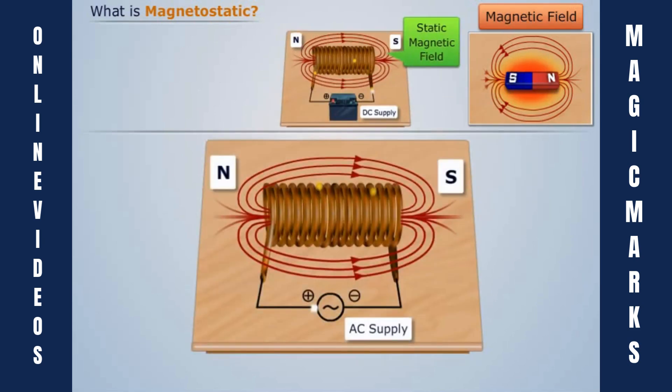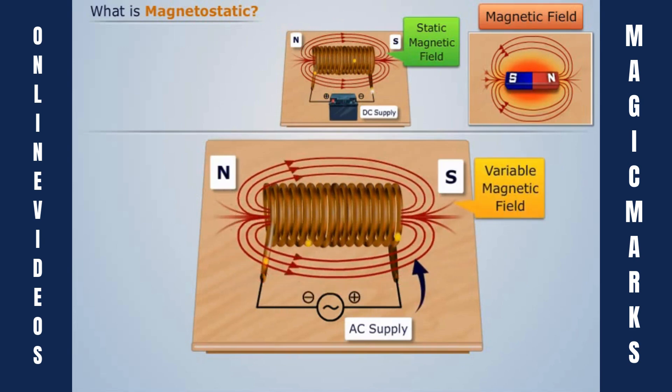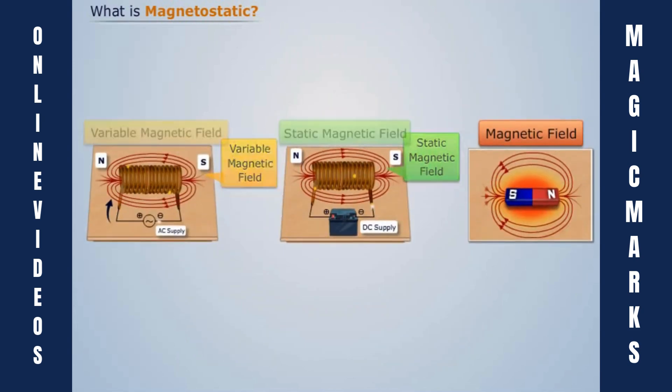Let's now consider a copper coil connected to an AC supply. When an alternating current is made to flow through the copper wire, then magnetic field is produced around the coil that varies with the alternating current.